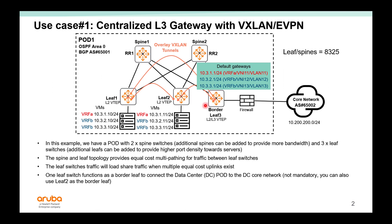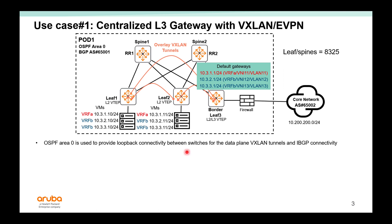One of the leaf switches, border leaf 3, will function as the border leaf for traffic to get in and out of the pod. It's not mandatory — you can also use leaf 2 as the border leaf. The border leaf basically has the default gateways for the different subnets, and you can use VRFs to isolate traffic. In this use case, we use OSPF Area 0 to provide loopback connectivity between all the switches in order for them to build the VXLAN tunnel. OSPF Area 0 also provides the ability for IBGP to peer.